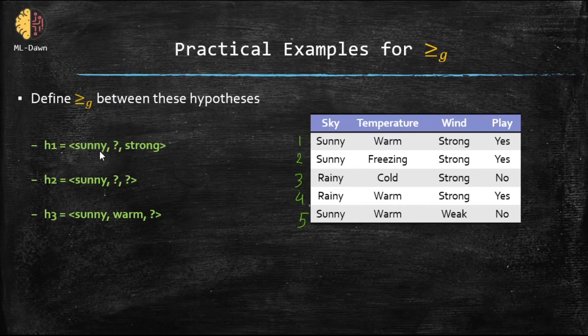For hypothesis number one, we need sunny and strong for the first and third attributes. We got sunny and strong for example number one. Number one satisfies it. And we've got sunny and strong for example number two. That also satisfies it. And we don't care about warm or freezing because of this question mark over here. We don't care about that.